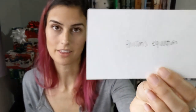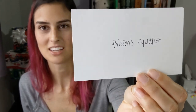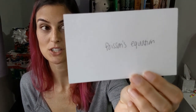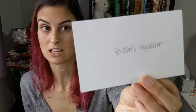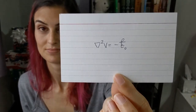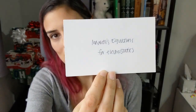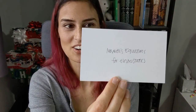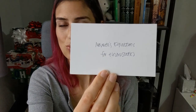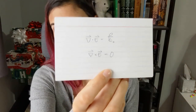Poisson's equation — we already saw the general solution, but here is the actual equation: the del-squared operator times V equals negative rho over epsilon naught. Maxwell's equations for electrostatics: the divergence of E equals rho over epsilon naught, and the curl of E is zero.